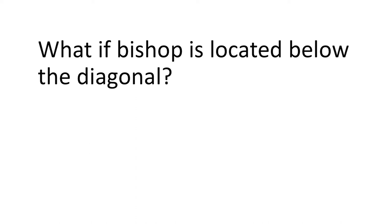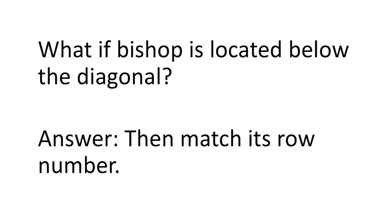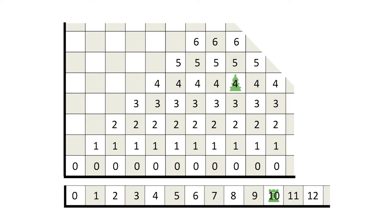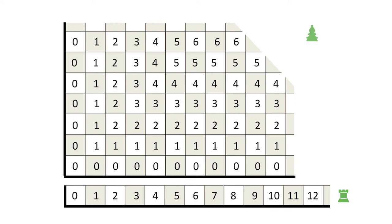But what if the bishop is located below the diagonal? Then it is his row number that the baby rook needs to match. Here is a well played game. So, the relevant number on the bishop's board above the diagonal is the column index. But below the diagonal, it is the row index.